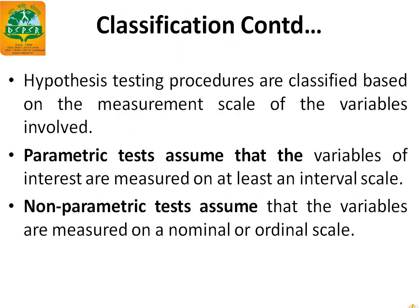These procedures are classified based on the measurement scale of the variables involved in the study. Scale on which data is measured is of four types: nominal, ordinal, interval, and ratio — nominal being the lowest form of scale and ratio the highest. For parametric tests, the variables have to be measured on interval or ratio scale. For non-parametric tests, the variables have to be measured on nominal or ordinal scale.